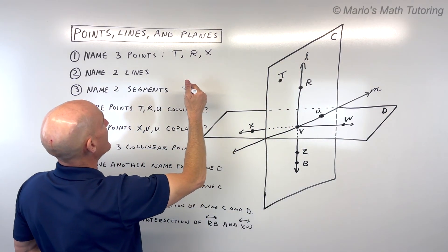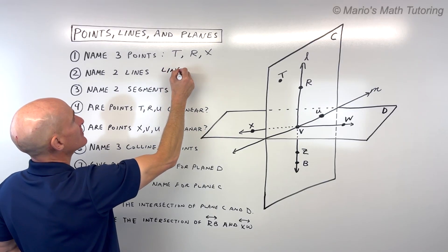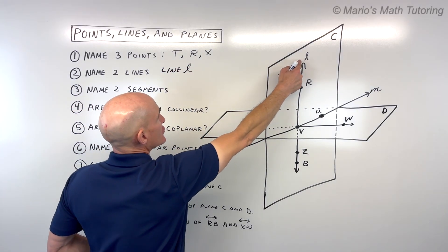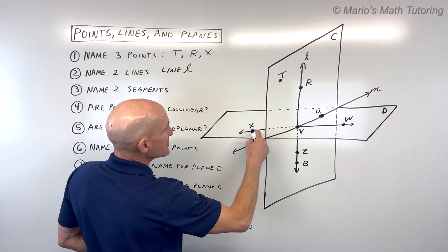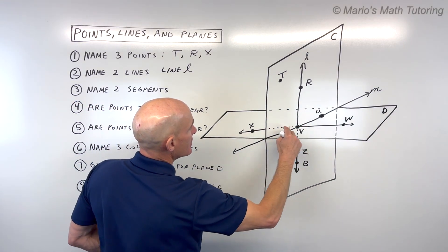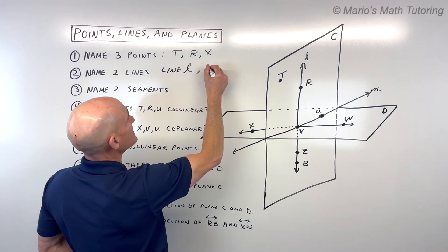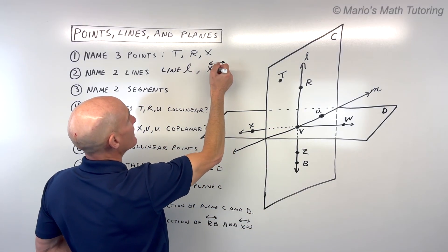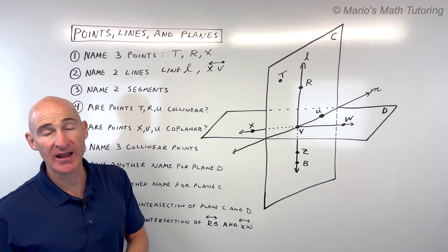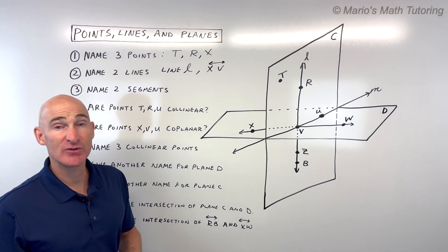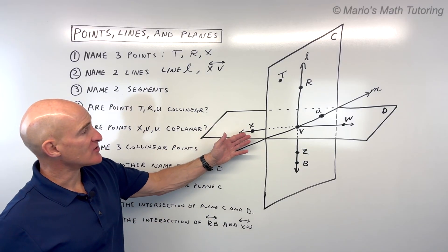I can label it as line L with this cursive letter. Or I can pick two points on the line. For example, this line I could say line XV, and I put that line symbol above it to indicate that it's a line and not a segment or a ray or the distance between X and V.